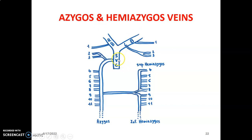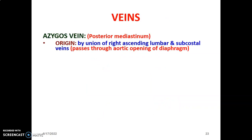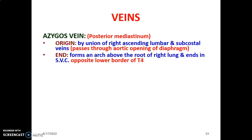Right and left brachiocephalic veins join to form the superior vena cava, and the main tributary of the superior vena cava is the azygous vein. The azygous vein has tributaries from the fourth to eleventh intercostal veins, with the second and third intercostals on the right joining it before termination. Superior hemiazygous is formed by the fourth to eighth intercostal vessels, while inferior hemiazygous has tributaries from the ninth to eleventh intercostal veins. The azygous vein is located in the posterior mediastinum, formed by the union of the right ascending lumbar vein and subcostal vein, passing through the aortic opening of the diaphragm. It terminates by forming an arc above the root of the right lung and emptying into the superior vena cava at the lower border of T4.